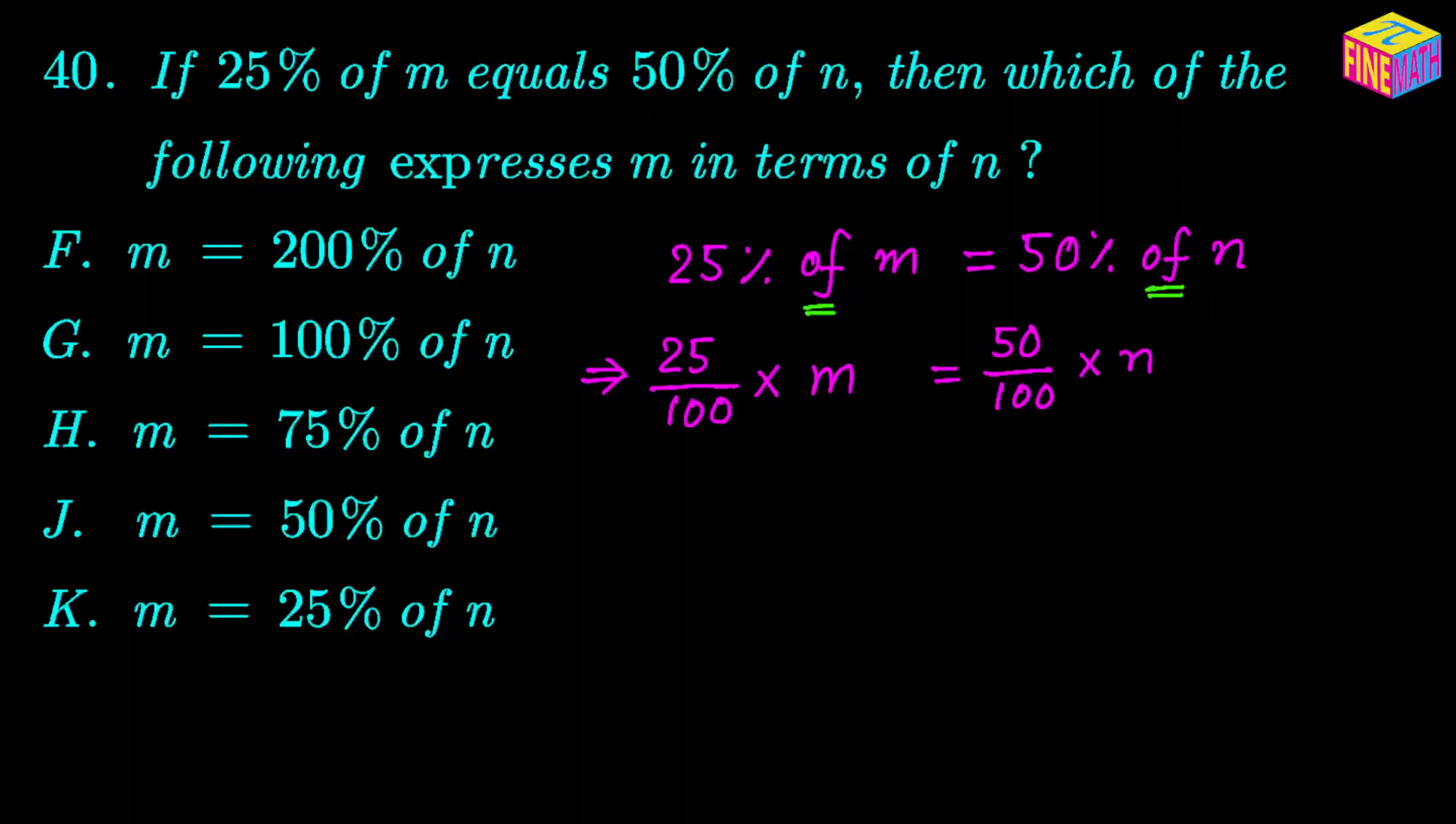Now we have to express m in terms of n. So let's keep m on the left hand side and transpose everything to the right hand side. So from here what do we get? Well, if we keep m on the left hand side, then m is equal to 50 over 100, which is already there on the right hand side, and then from the left hand side when we bring 25 over 100 to the right hand side, it will become 100 over 25 if we do the transposition, and then we already have the n.